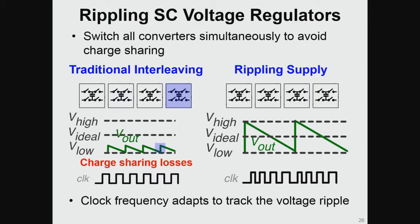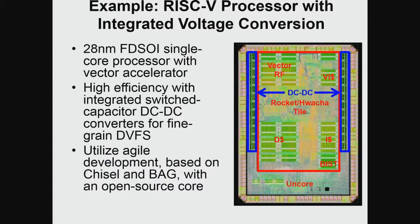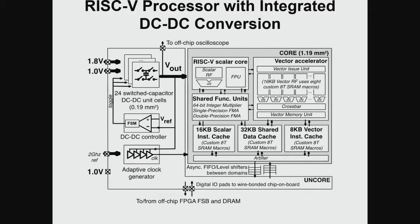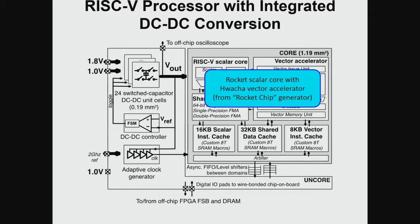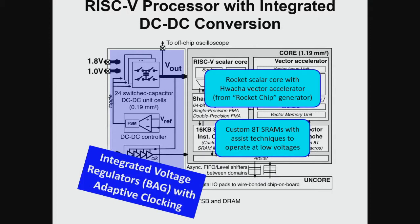The way this is done is by using rippling power supplies and adapting the clock frequency to go up and down with the supply voltage. This was implemented in a 28-nanometer fully depleted SOI process — a fairly state-of-the-art process. It has high-efficiency DC-DC converters integrated together with a Rocket chip, designed using generators for both analog and digital blocks. The chip includes a RISC-V core, a vector accelerator, custom memories, and BAG-generated analog blocks.